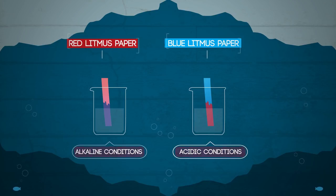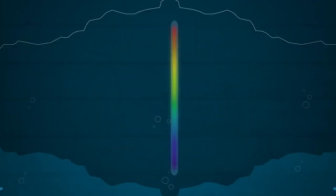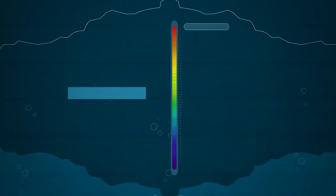However, litmus paper only tells us whether something is acid or alkali, but it does not tell us how acidic or alkaline a substance is. For this, we have the pH scale and a universal indicator.